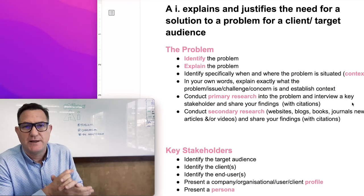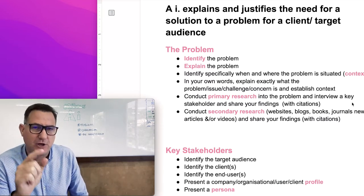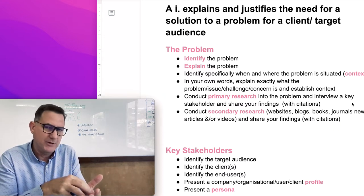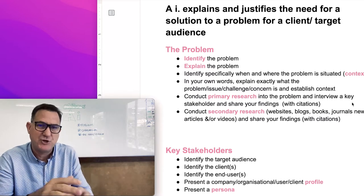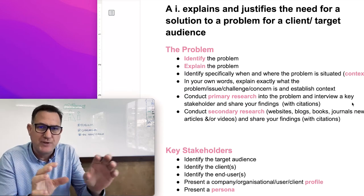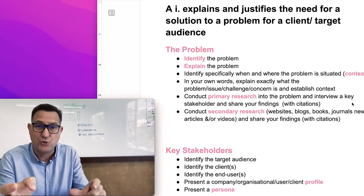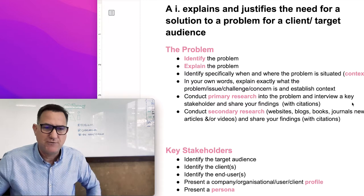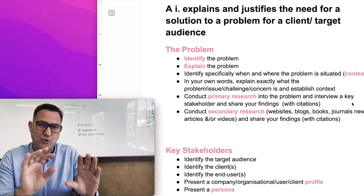Once you've explained the problem, the next section is to identify the key stakeholders. According to the assessment criteria, you need to identify the client and/or target audience. Think about the problem and identify all the different key stakeholders that this issue affects. You can then focus in on one or two of these stakeholders — the client, the target audience, or the end user. You could list these as bullet points about the stakeholders, client, and target audience.